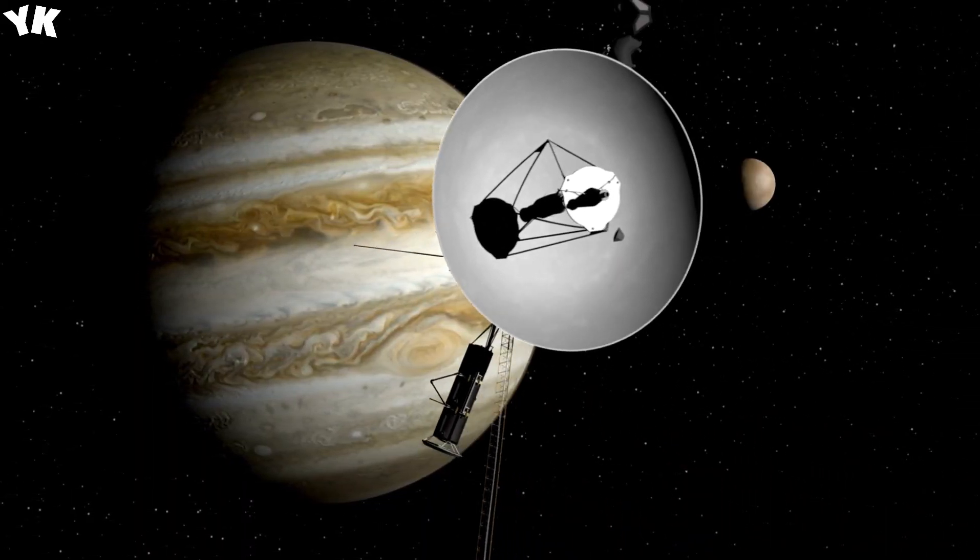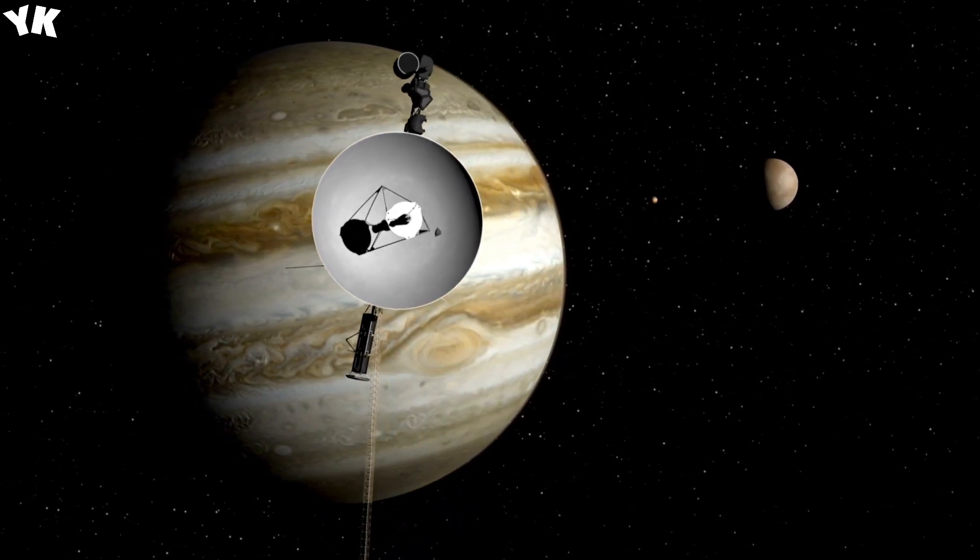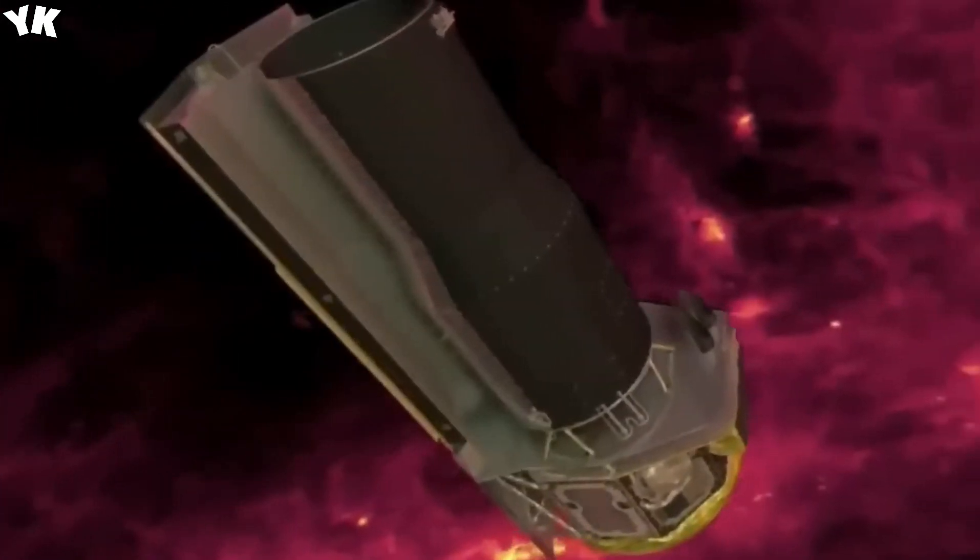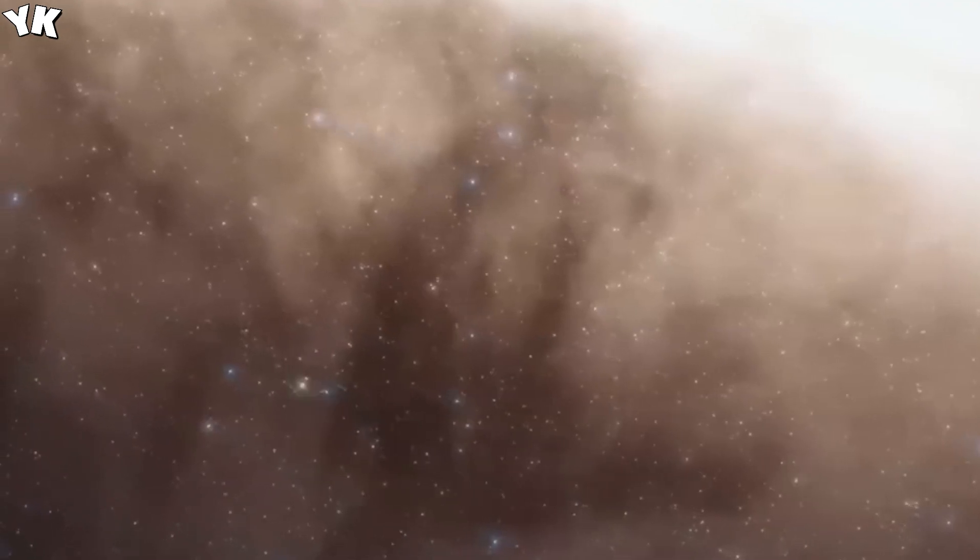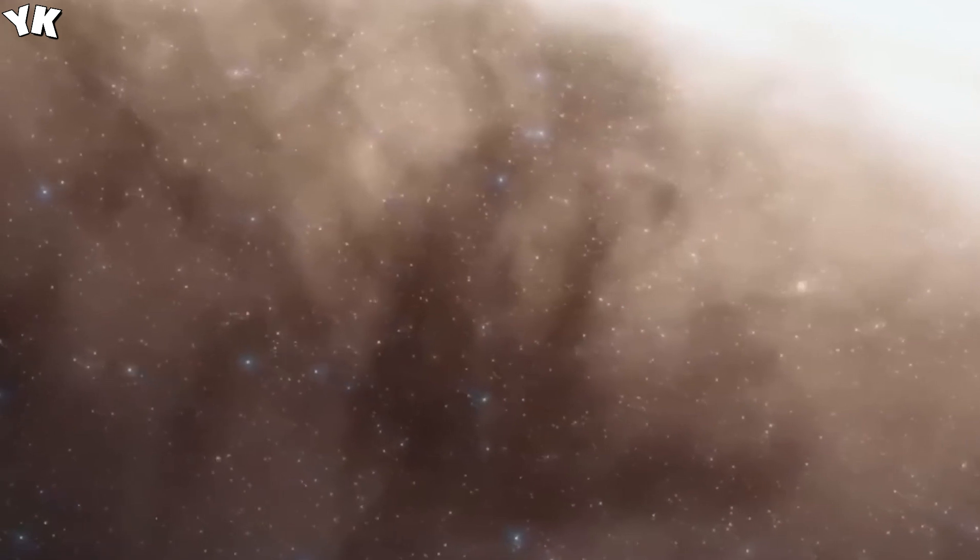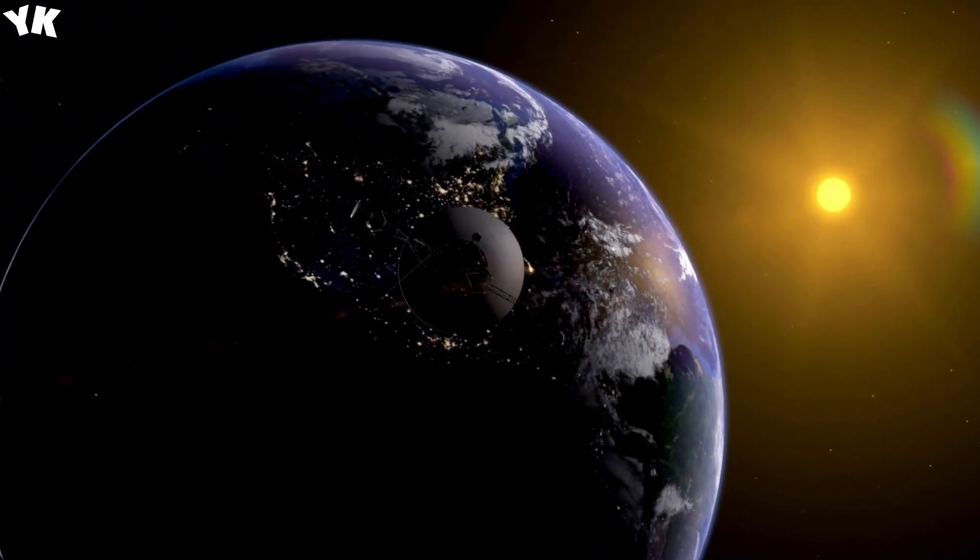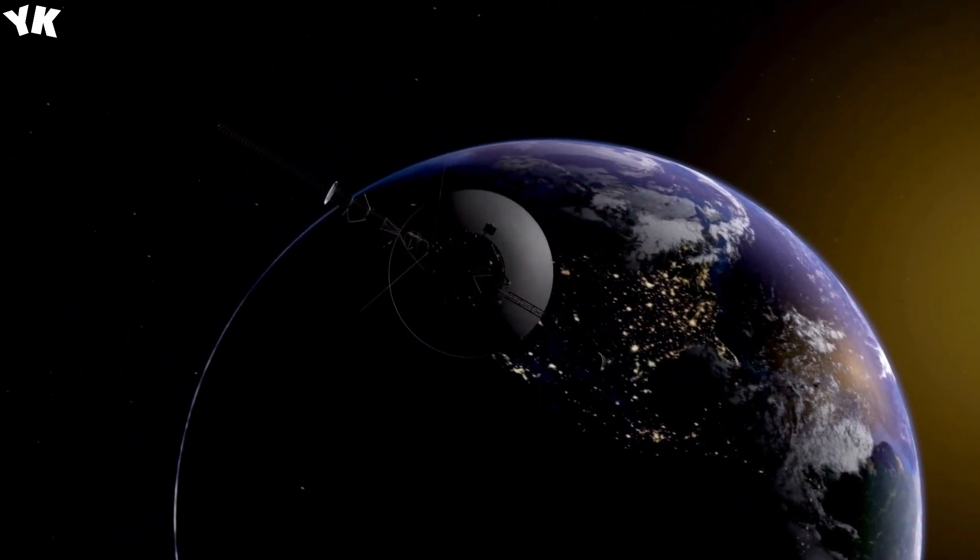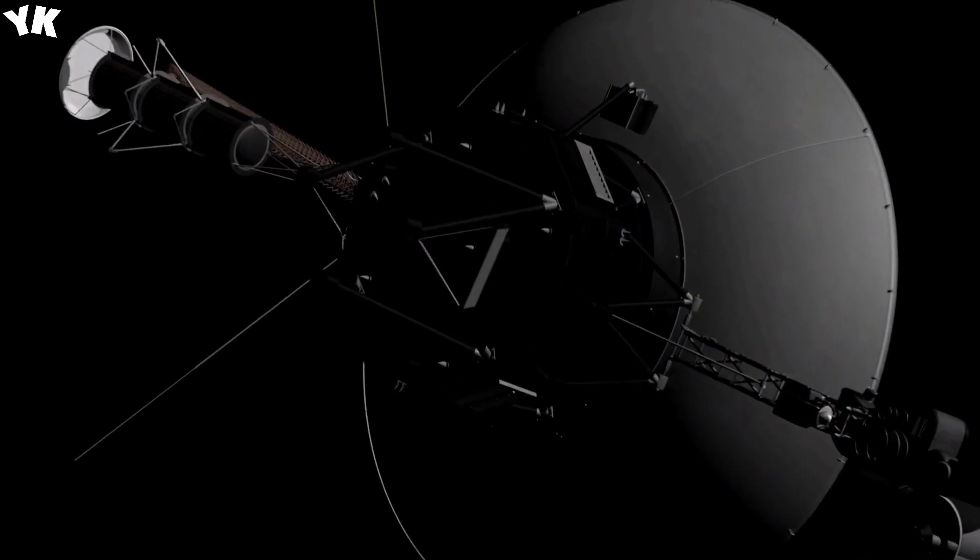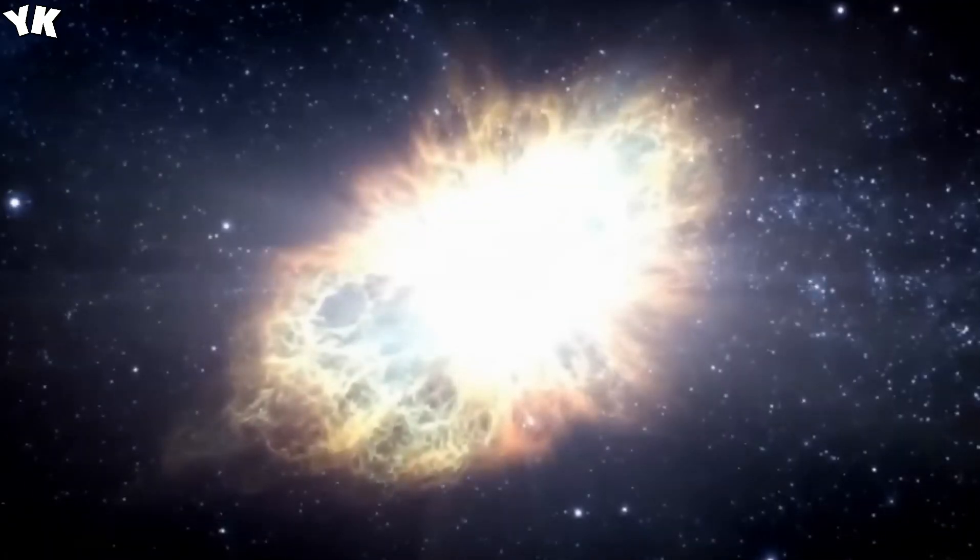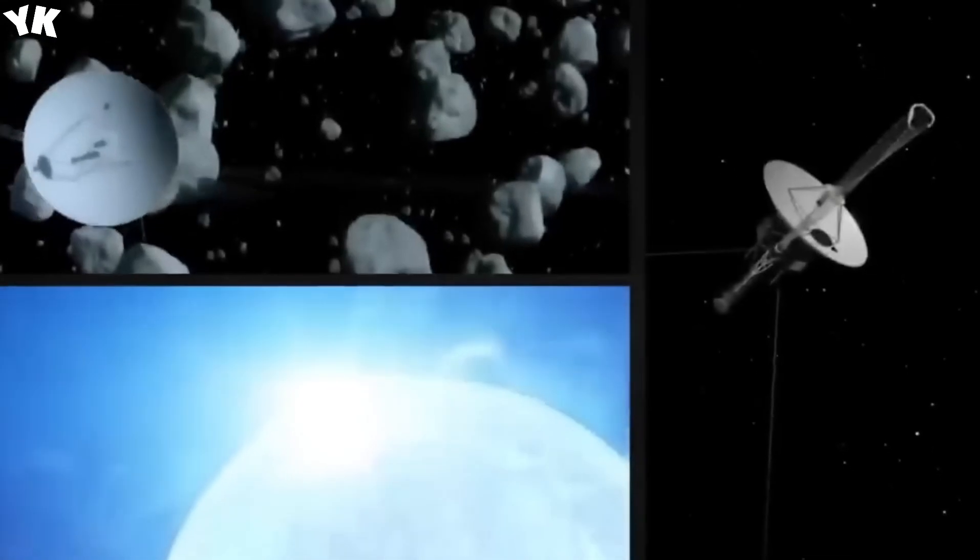At the outset of its epic journey, Voyager 1's RTG generated a hefty 470 watts of electrical power. However, as it voyaged deeper into space, its power output gradually dwindled. Plutonium-238 has a half-life of approximately 87.7 years, meaning its power output decreases by half every 87.7 years. Presently, Voyager 1's RTG is estimated to produce around 250 watts of power, a testament to its endurance amidst decades of extreme conditions.